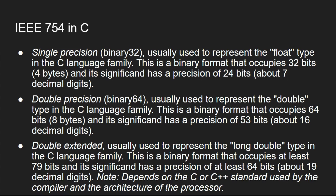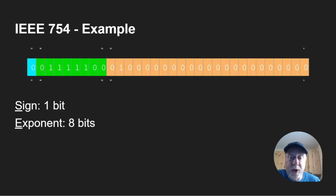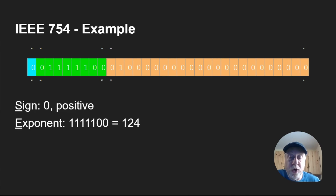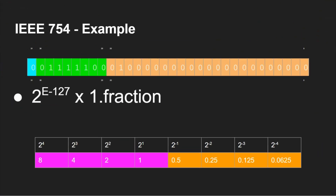Here is an example of an IEEE 754 floating point number with three distinct sections shown in different colors. There's one bit for the sign (plus or minus), the exponent is eight bits, and the fraction is another 23 bits. In this case the sign is zero meaning positive, the exponent is 1 1 1 1 1 1 0 0 which is 124, and then the fraction is 0 1 followed by zeros — which represents 0.25 as we saw from binary fractions.